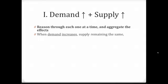When demand increases, supply remaining the same, the higher demand puts an upward pressure on price. So we expect the equilibrium price to go up if this was the only thing that was happening. If you want to review part one of our discussion for changes one at a time, please pause this video. When demand increases, supply remaining the same, the higher demand puts an upward pressure on price, so equilibrium price is expected to increase. The higher demand is expected to result in more transactions in the market, so equilibrium quantity is expected to increase as well.